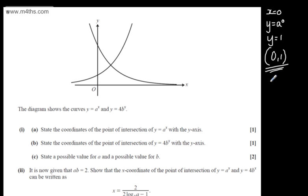Let's now look at part b for one mark. We're asked to state the coordinates of the point of intersection of y equals 4b to the x with the y axis.